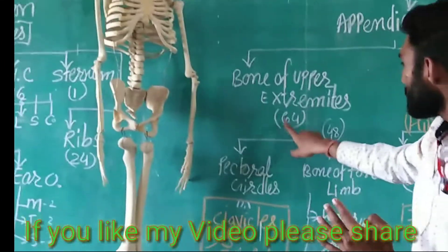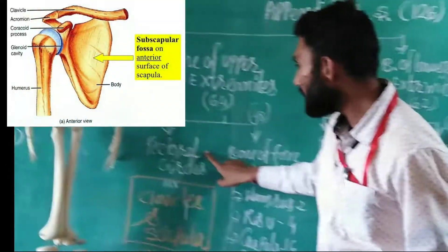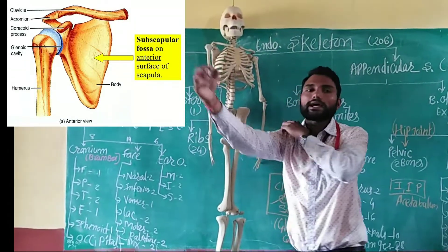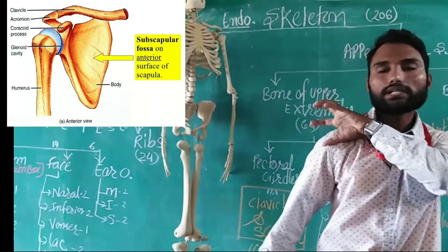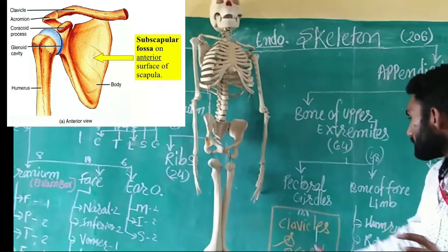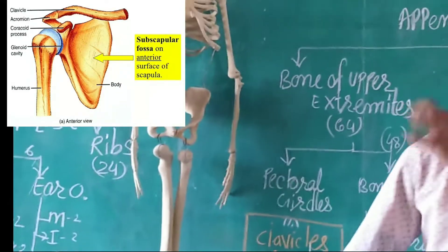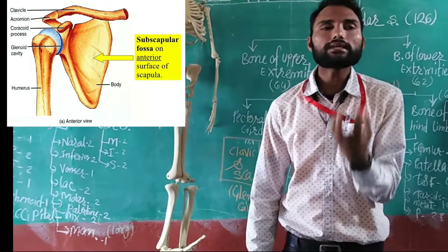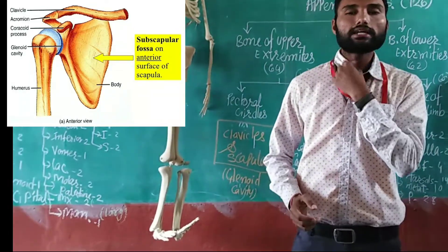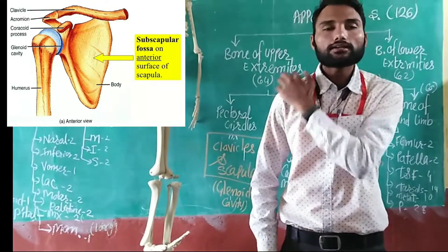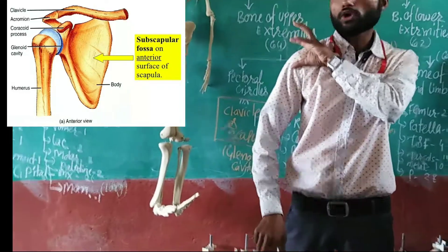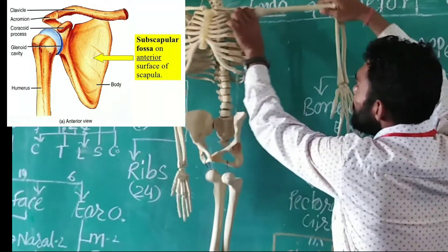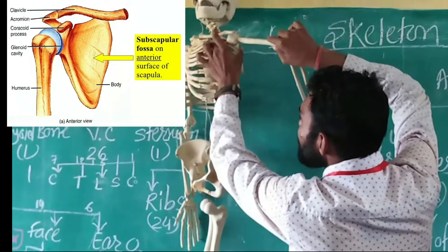The appendicular skeleton has a total of 64 bones, divided into two categories. First is the pectoral girdle and the other is the bone of four limbs. The pectoral girdle consists of two bones: the clavicle and the scapula. Our hand is a ball-and-socket joint — a socket is present formed by these two bones. The collar bone is the clavicle and the shoulder blade is the scapula, together forming the socket.